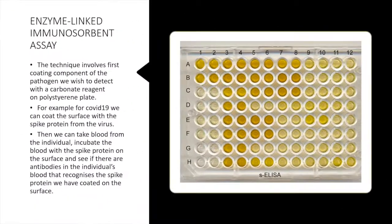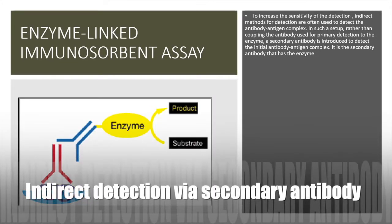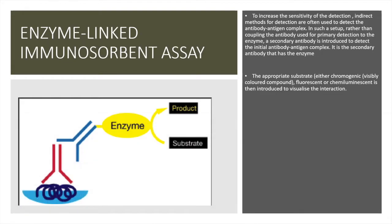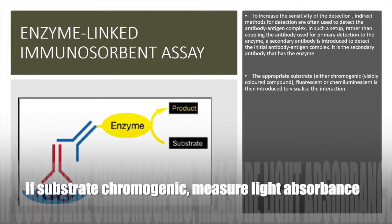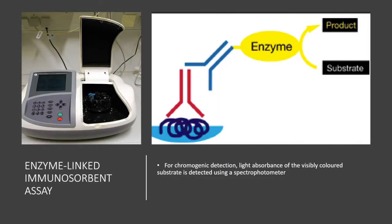The initial antibody-antigen detection can have its sensitivity and specificity increased by introducing an additional detector, a secondary antibody, which allows you to detect the initial interaction indirectly. So it's called an indirect ELISA and tends to be much more sensitive and less likely to give false positives. You introduce a chromogenic detection system where light absorbance of the visibly colored substrate is used to detect the interaction, and you use something called a spectrophotometer.